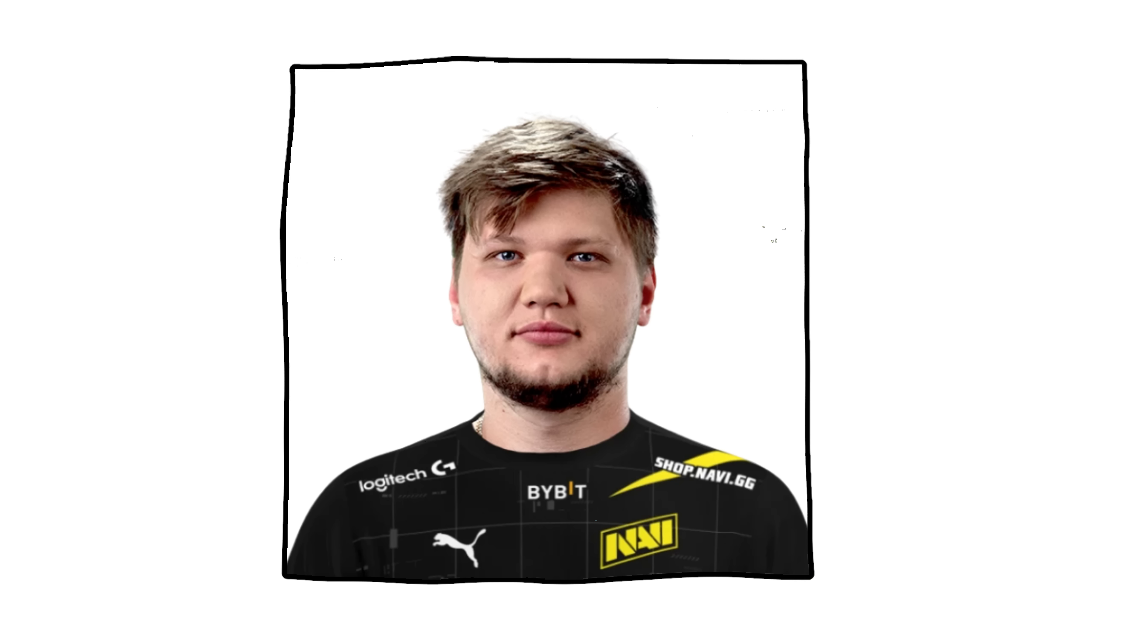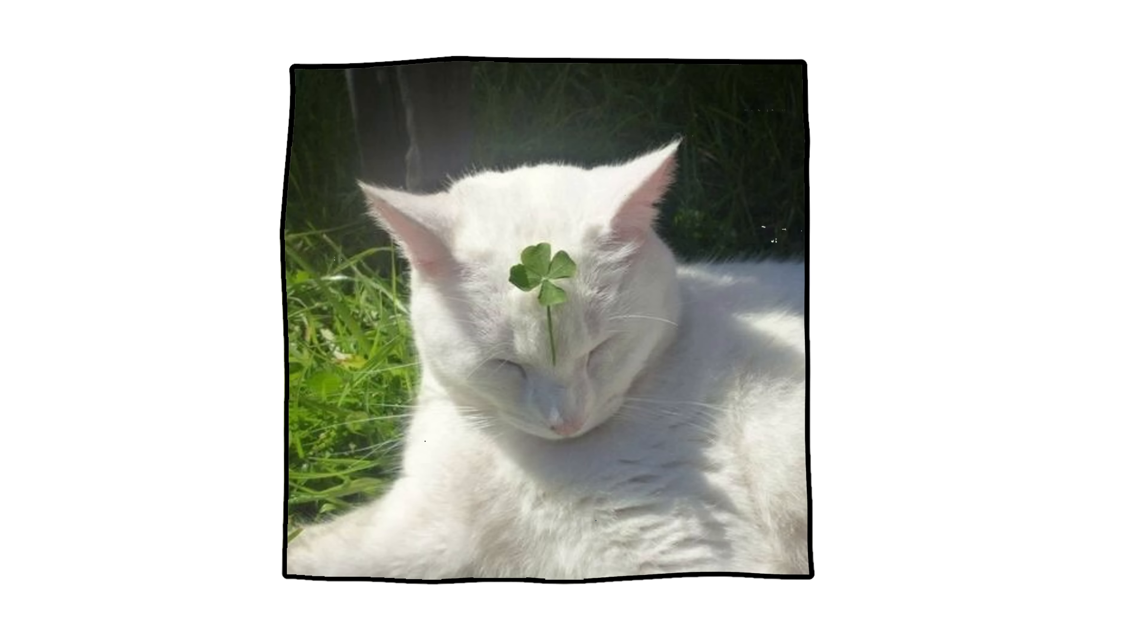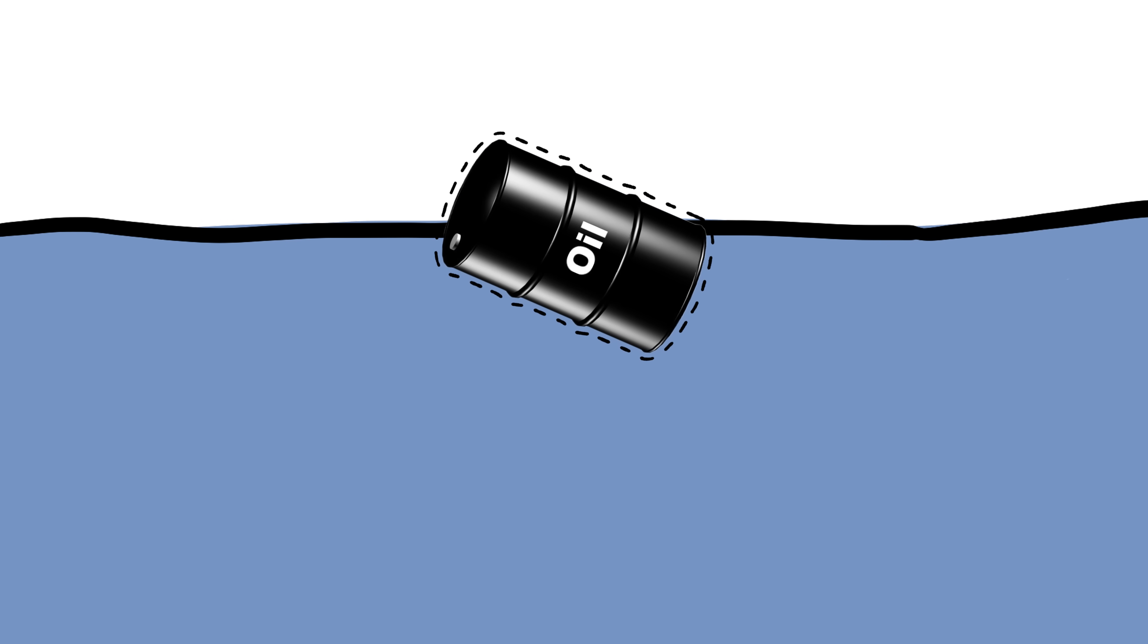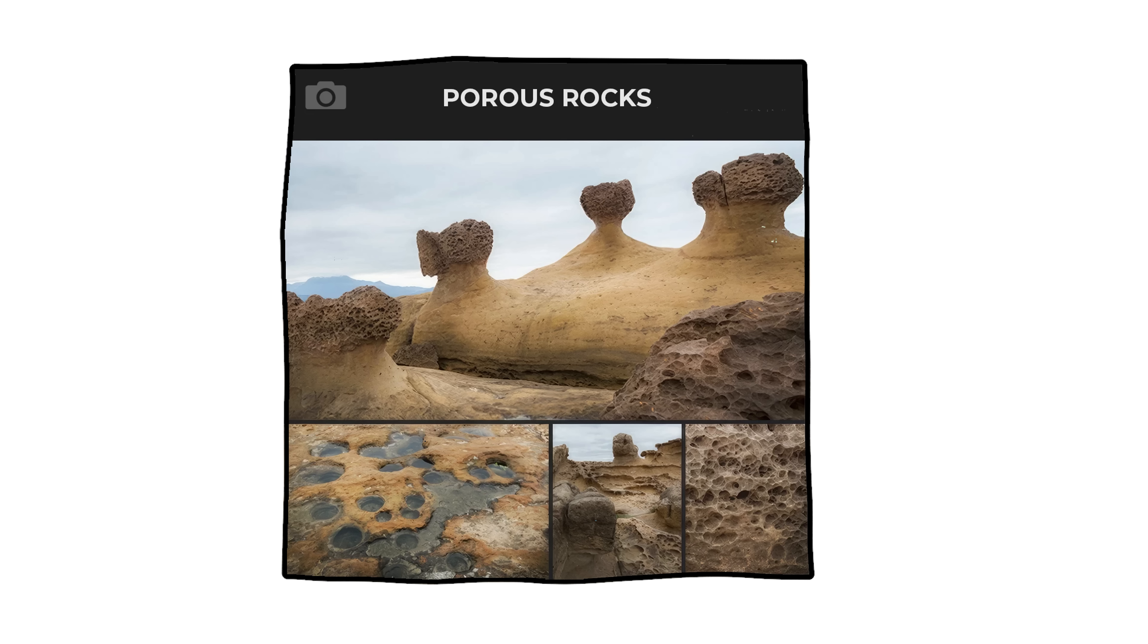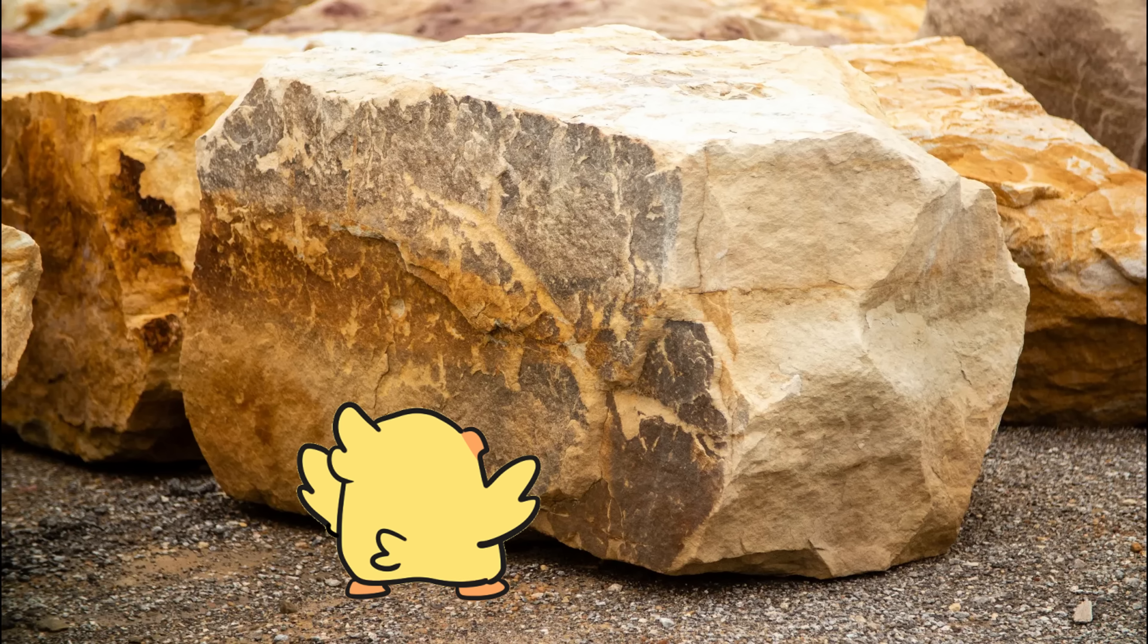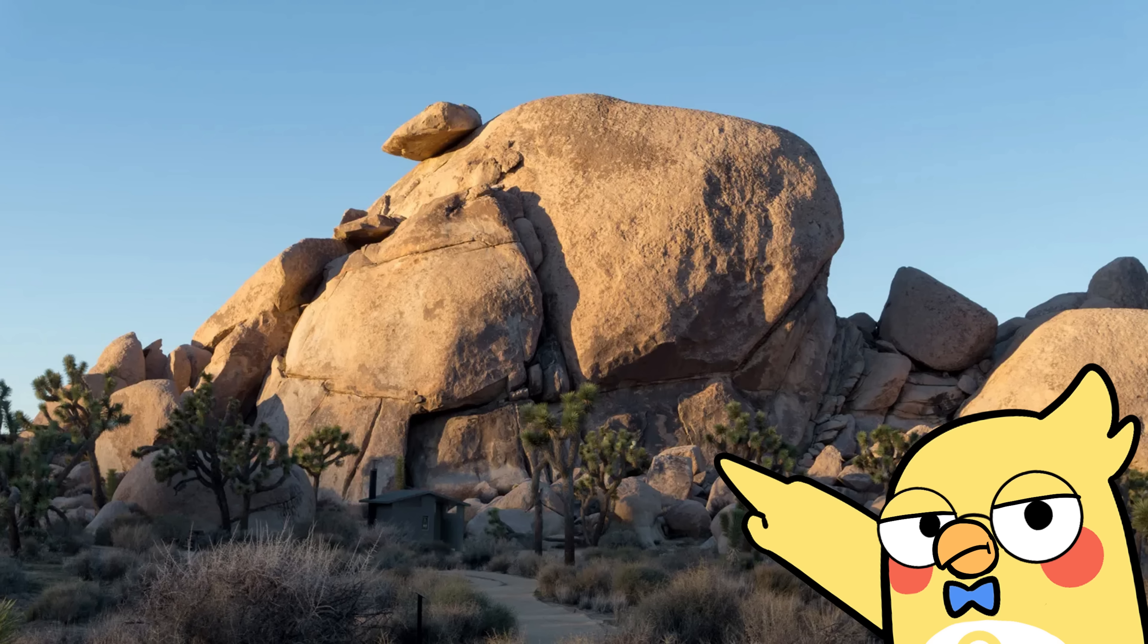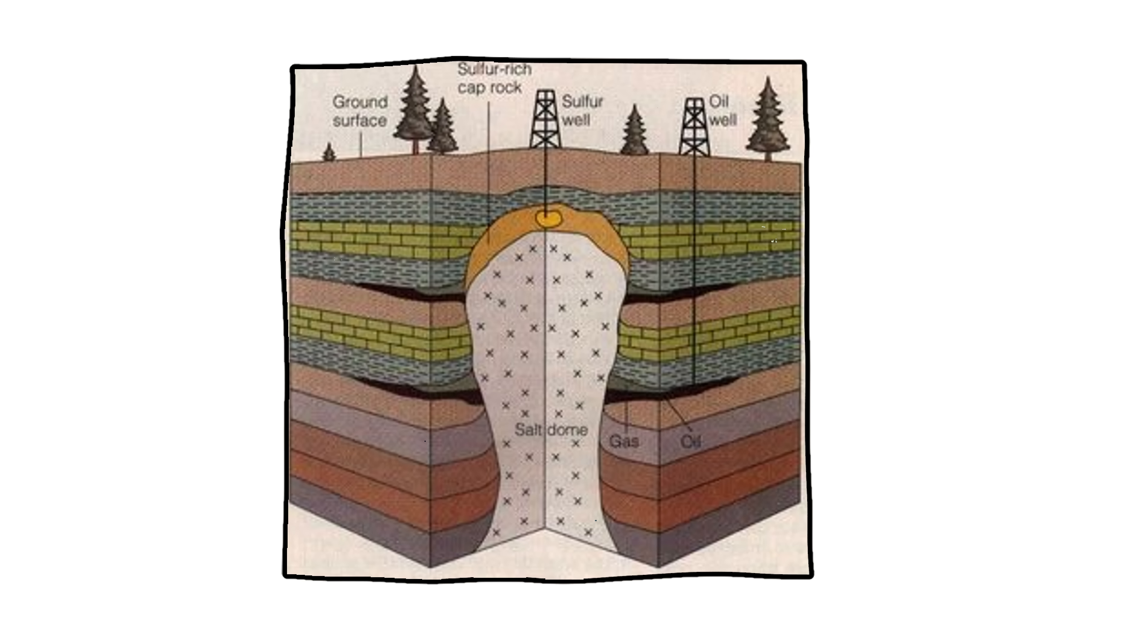So why is it underground? Simple. Gravity and rock and a bit of luck. Oil and gas are lighter than water, so they tend to migrate upward through porous rock, like sandstone, until something stops them. That something is called a cap rock. A dense, non-porous layer, like shale, that traps them in place.